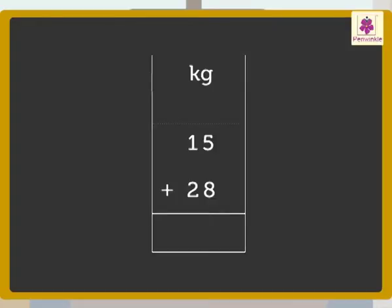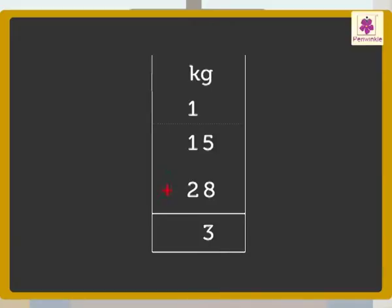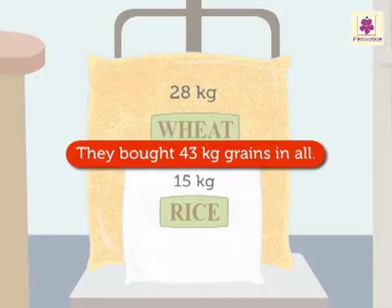Now, let's add kilograms. 5 plus 8 is equal to 13. Carry 1, 10 above 1. Add 1 plus 1 plus 2 is equal to 4. I got the answer as 43 kilograms. Perfect. We bought 43 kilograms of grains in all.